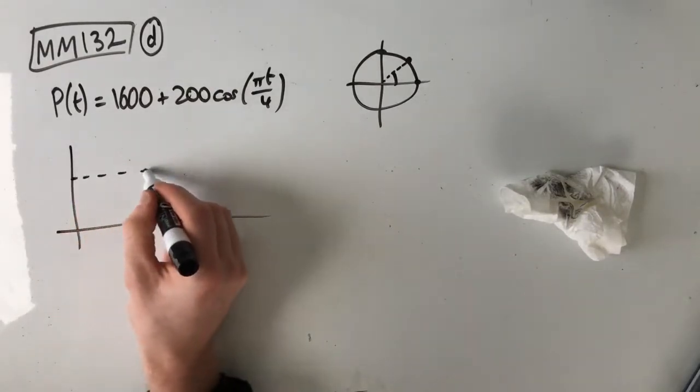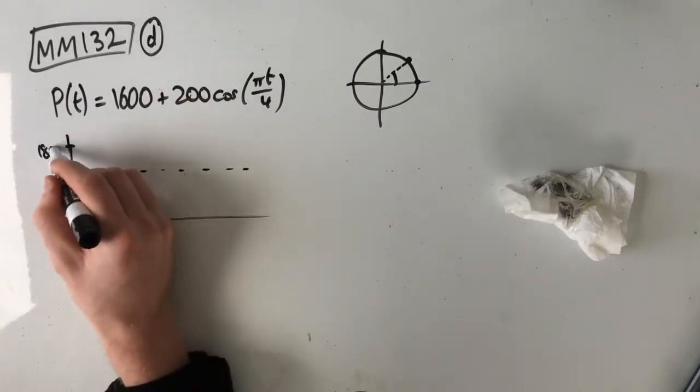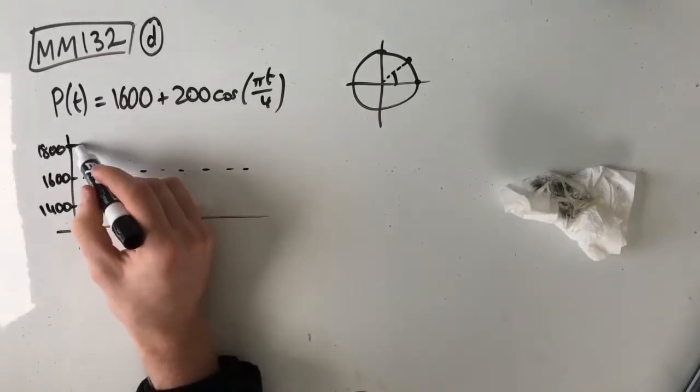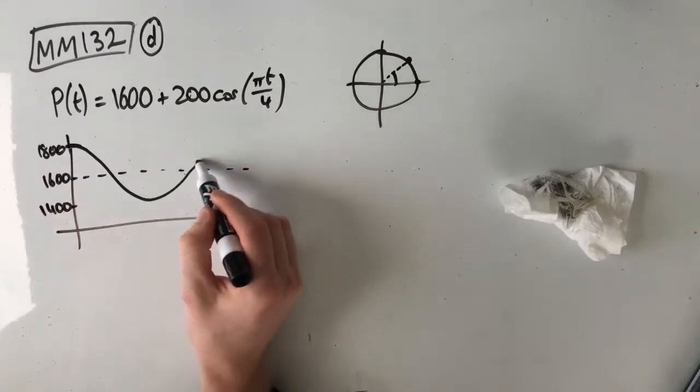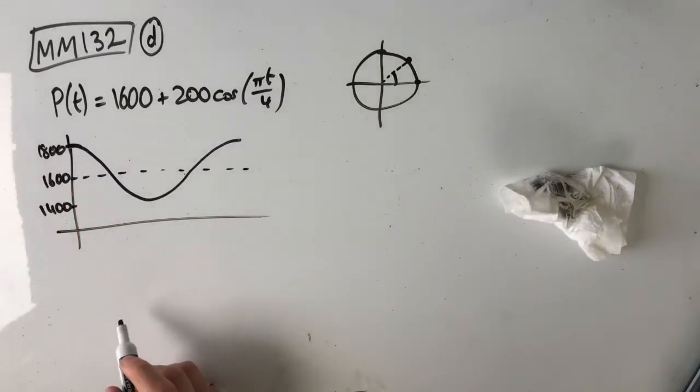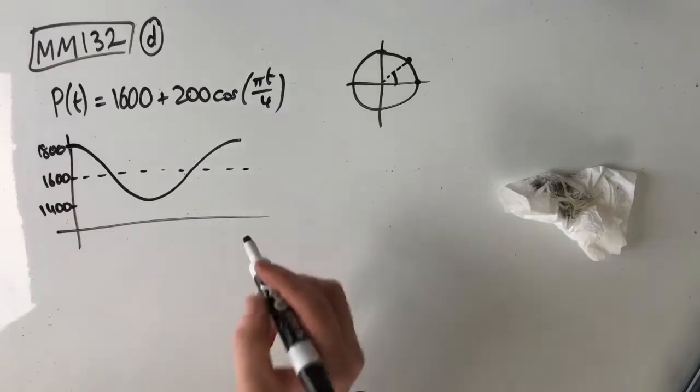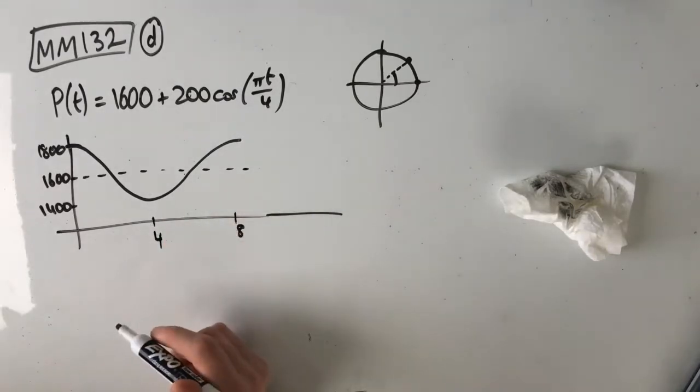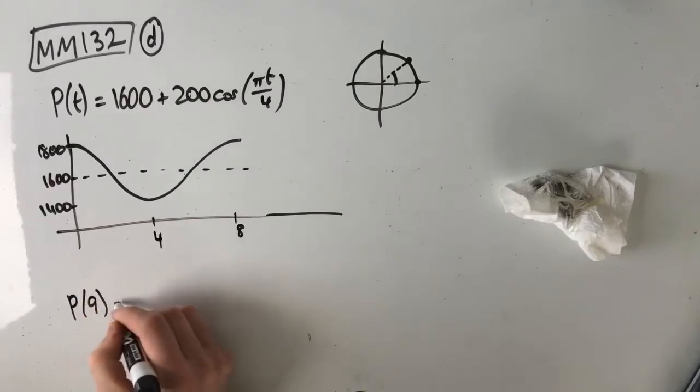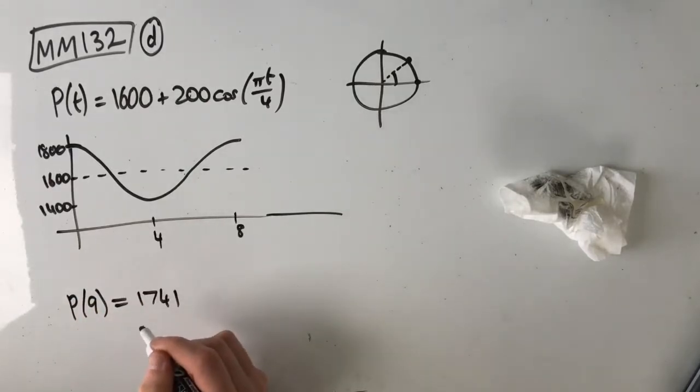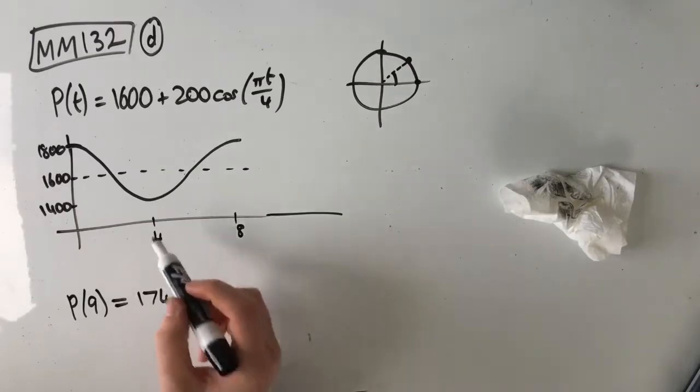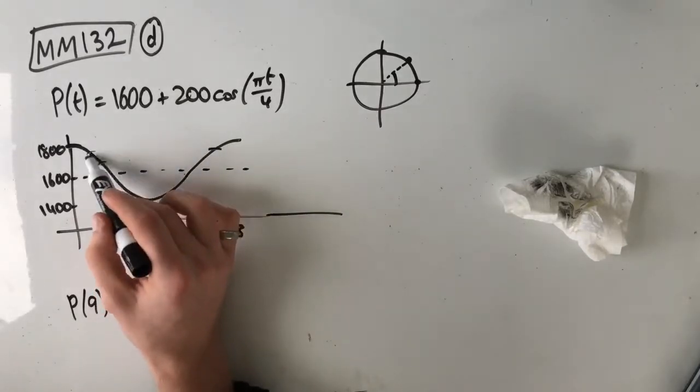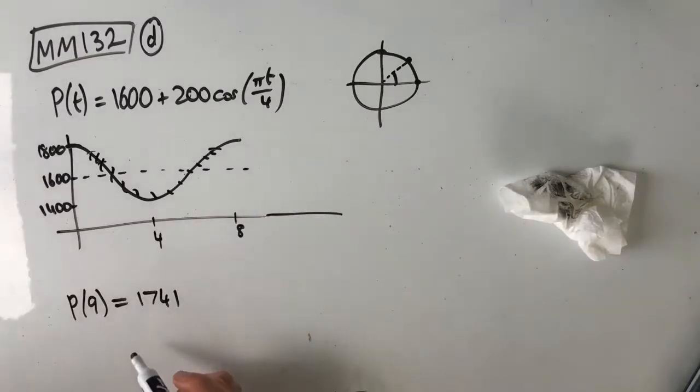This graph looks something like we've got a midpoint of 1600, maximum of 1800, minimum of 1400, as we worked out before. It's a positive cos graph, so it starts up here somewhere, and it goes something like this. Our period is 8 months. So this is 8 here, this is 4. p(9) was equal to 1741. We're trying to figure out the proportion of time when the population of possums in the area was less than that. So 1741 is somewhere here, which means that we want all of this time under here. That's the proportion of time that we're looking for.